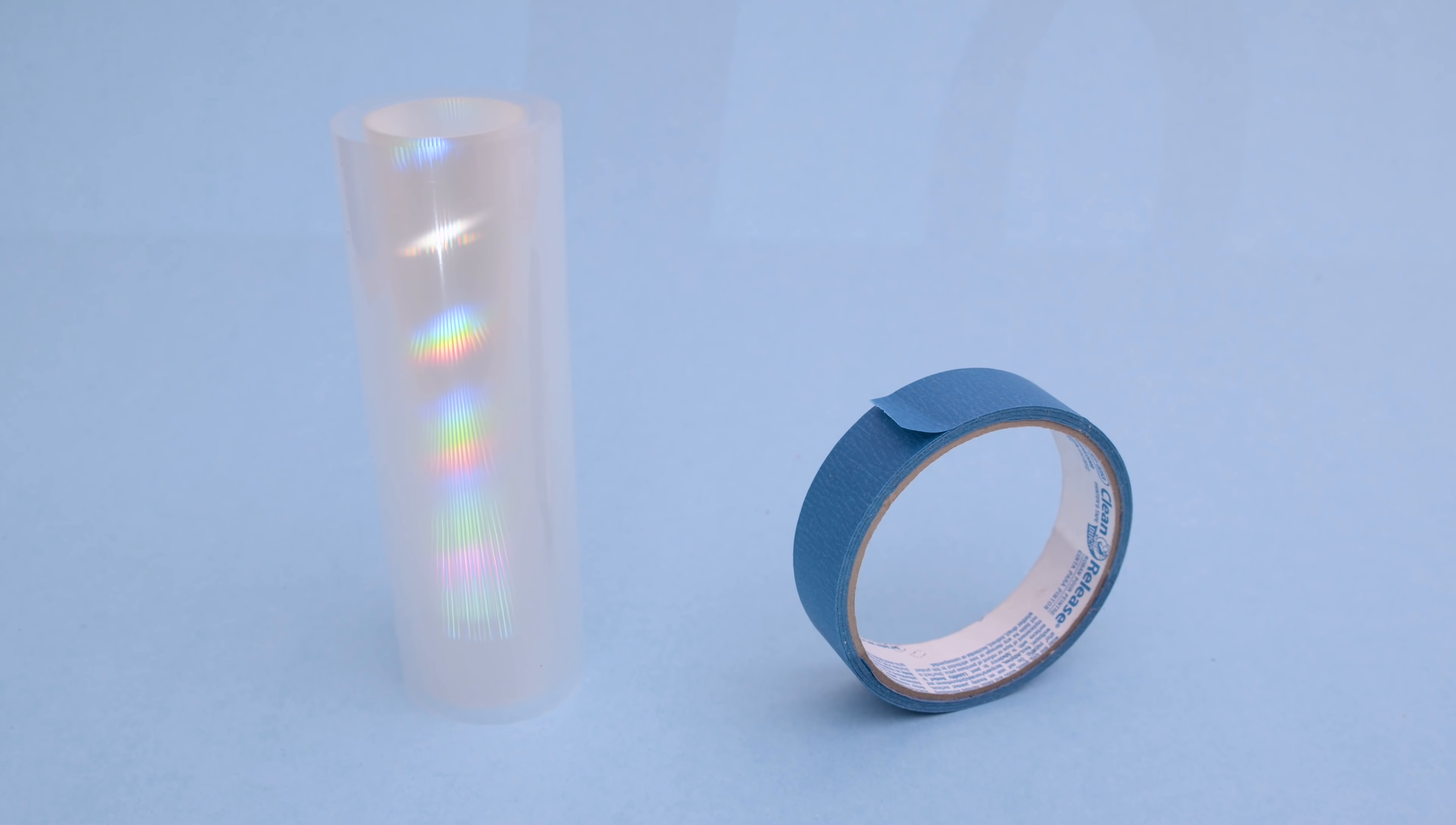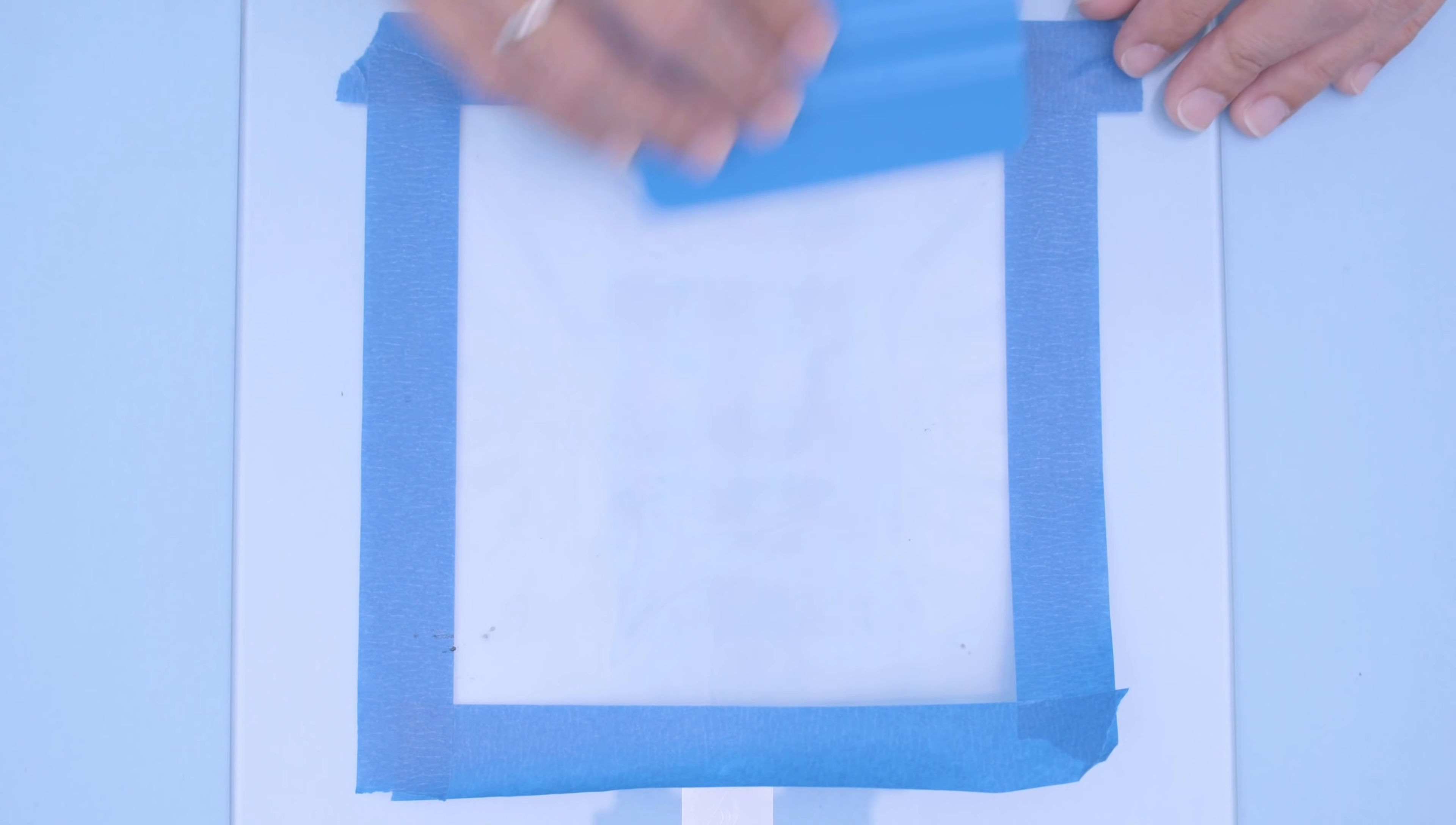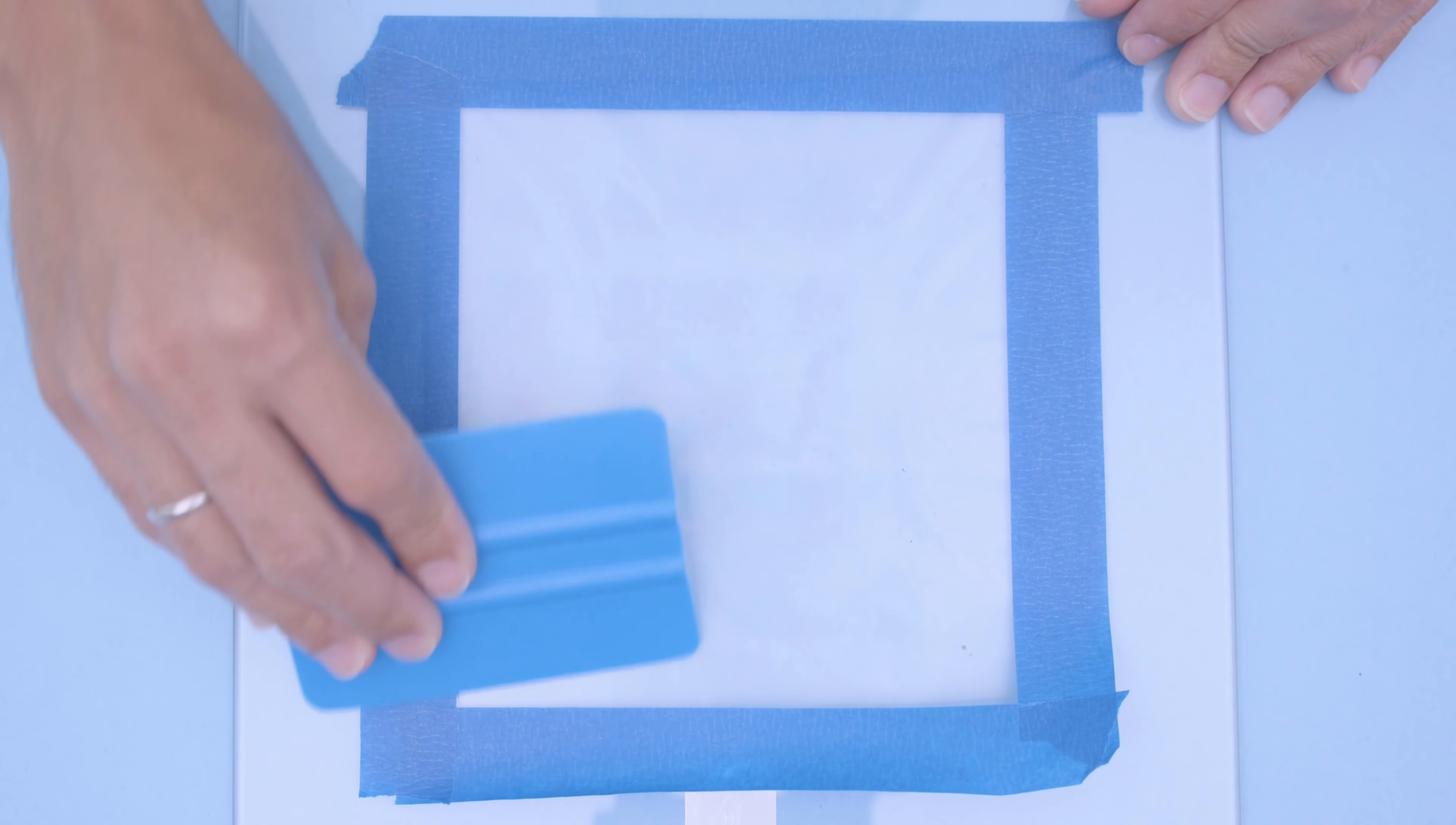We used blue painter's tape to adhere the sheet to our glass bed. Strips along the edges will keep it in place while printing. We suggest using a window squeegee to knock out any air bubbles.